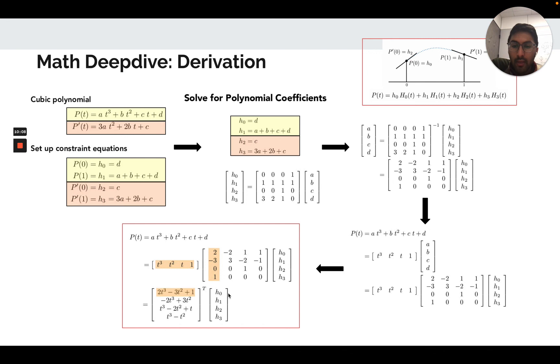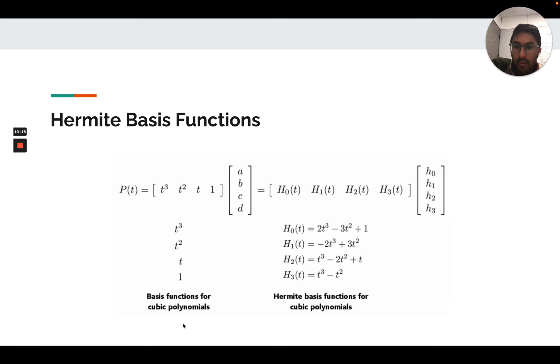And the coefficients given by the user, h0 through h3, weight these different basis functions. The Hermite basis functions are shown on the bottom right. On the left are the basis functions for cubic polynomials. And the nice thing about these new basis is that we can directly plug in the constraints given as input as a combination of these basis.